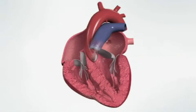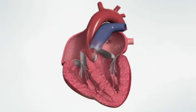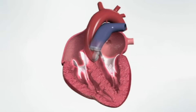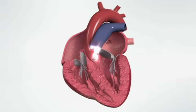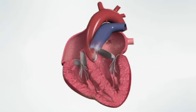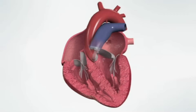Your heart has four valves that control the flow of blood. Two control blood flow through your heart and two control blood flow out of your heart. The valves function like one-way doors to keep blood flowing in one direction.